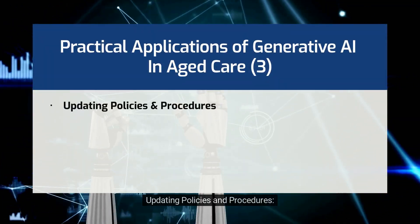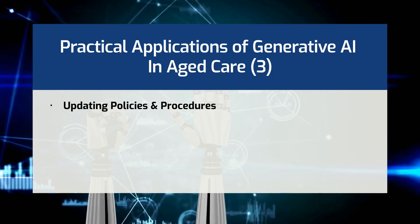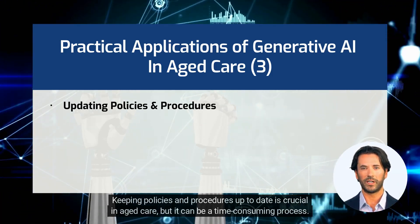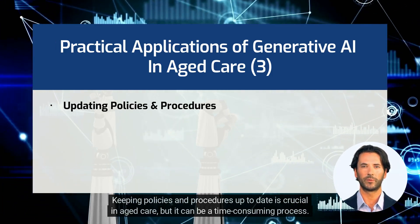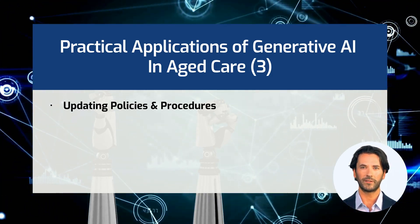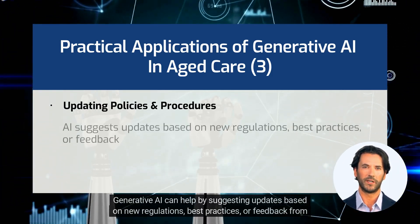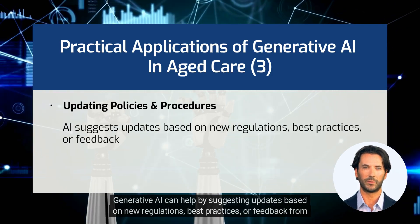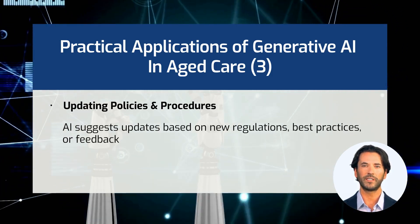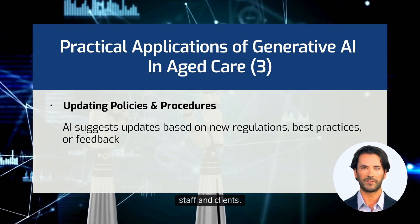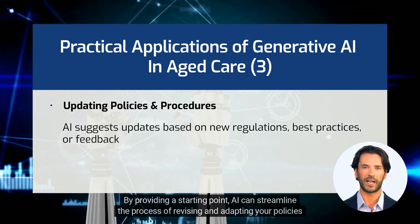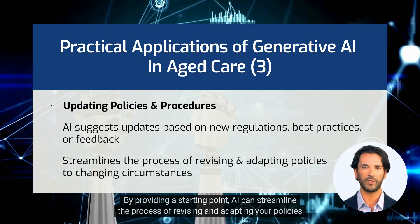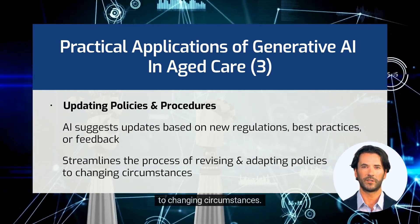Updating policies and procedures. Keeping policies and procedures up to date is crucial in aged care, but it can be a time-consuming process. Generative AI can help by suggesting updates based on new regulations, best practices, or feedback from staff and clients. By providing a starting point, AI can streamline the process of revising and adapting your policies to changing circumstances.